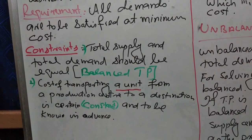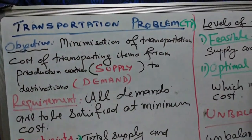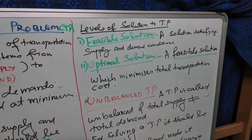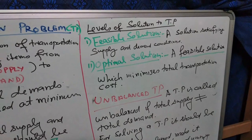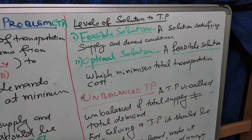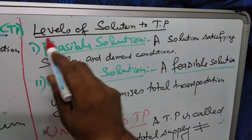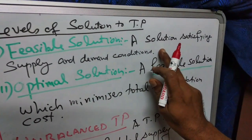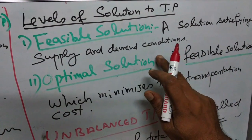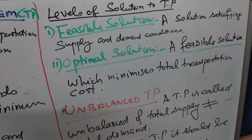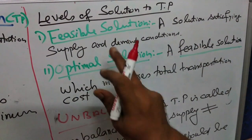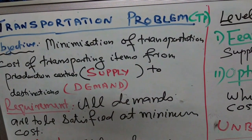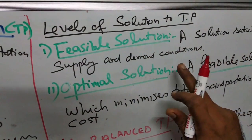Our objective is minimization. We have to get a solution — just like a linear programming problem, a transportation problem also needs a solution. There are two levels of solution. The first level is a feasible solution, which means a solution satisfying supply and demand conditions. In that situation, minimization is not the concentration; only satisfying demand and supply is called the feasible solution.